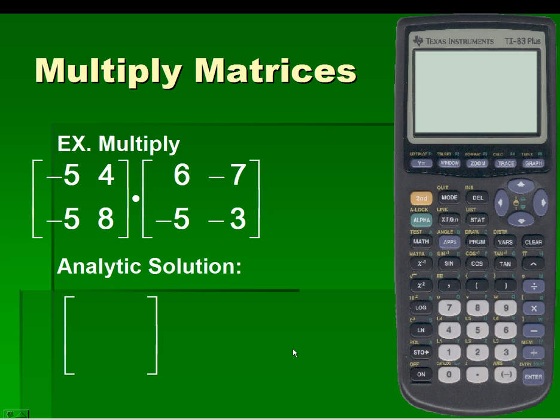Let's take a look at the analytic solution for multiplying matrices. In the analytic solution, we will sum the product of elements of the rows of matrix A with the columns of matrix B.